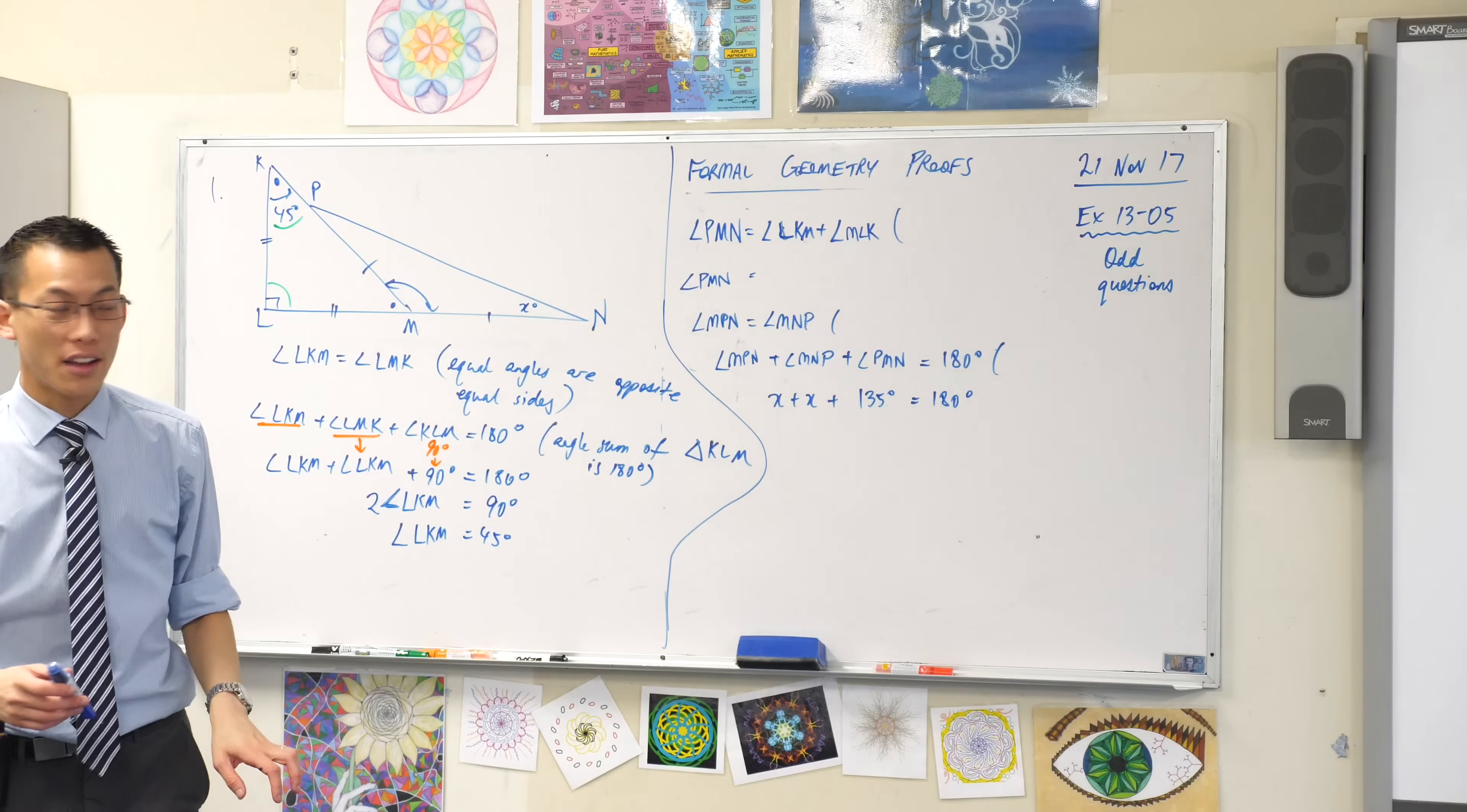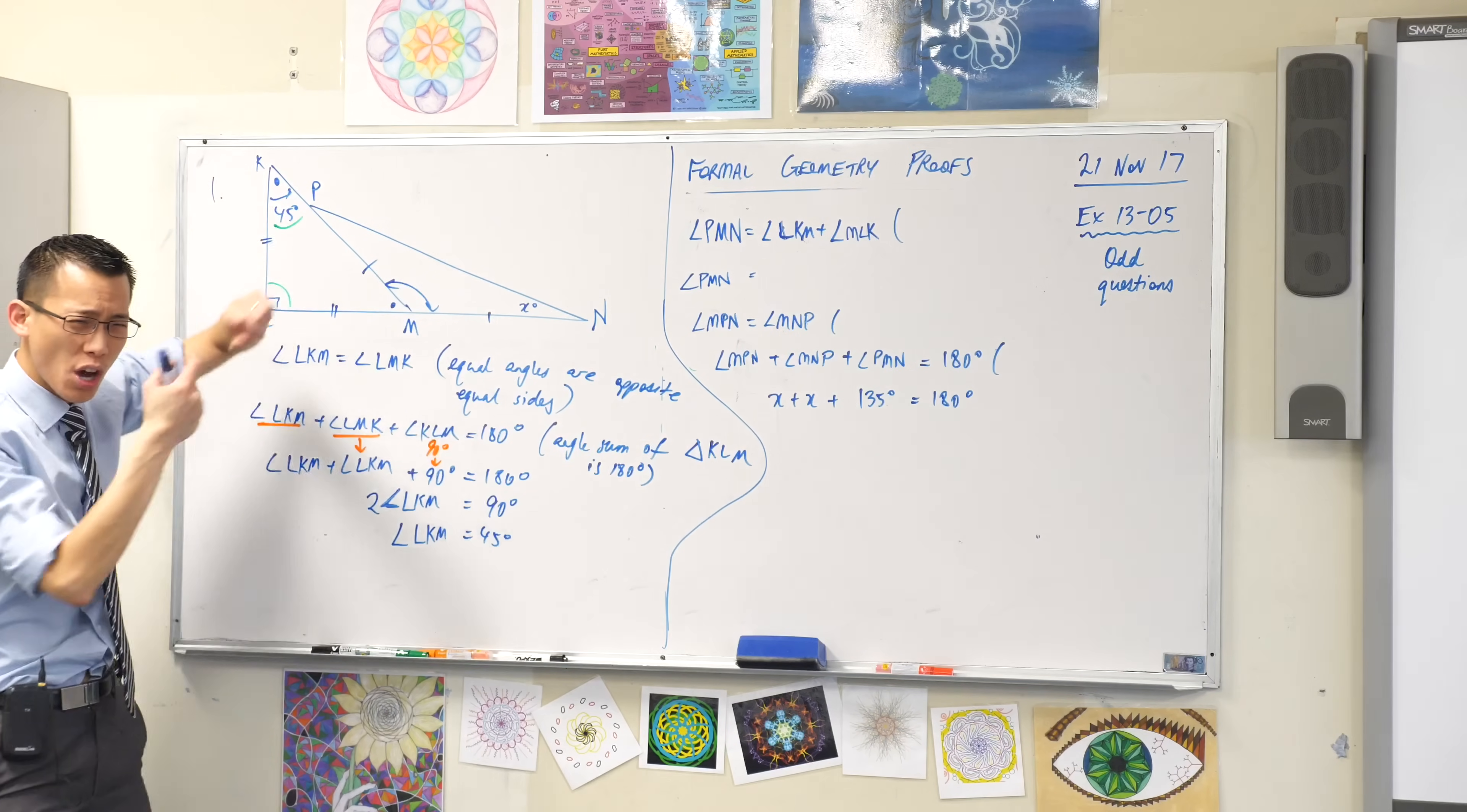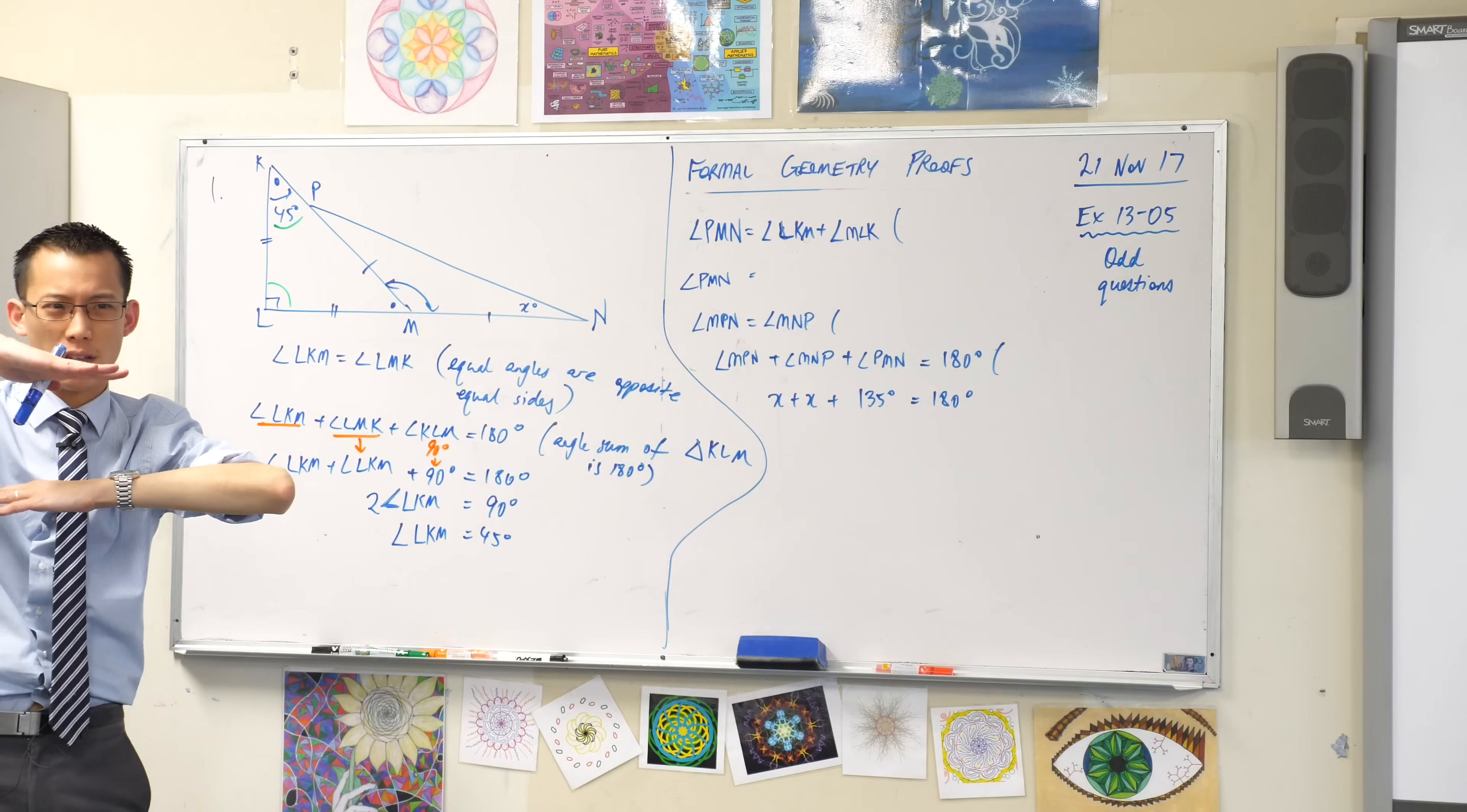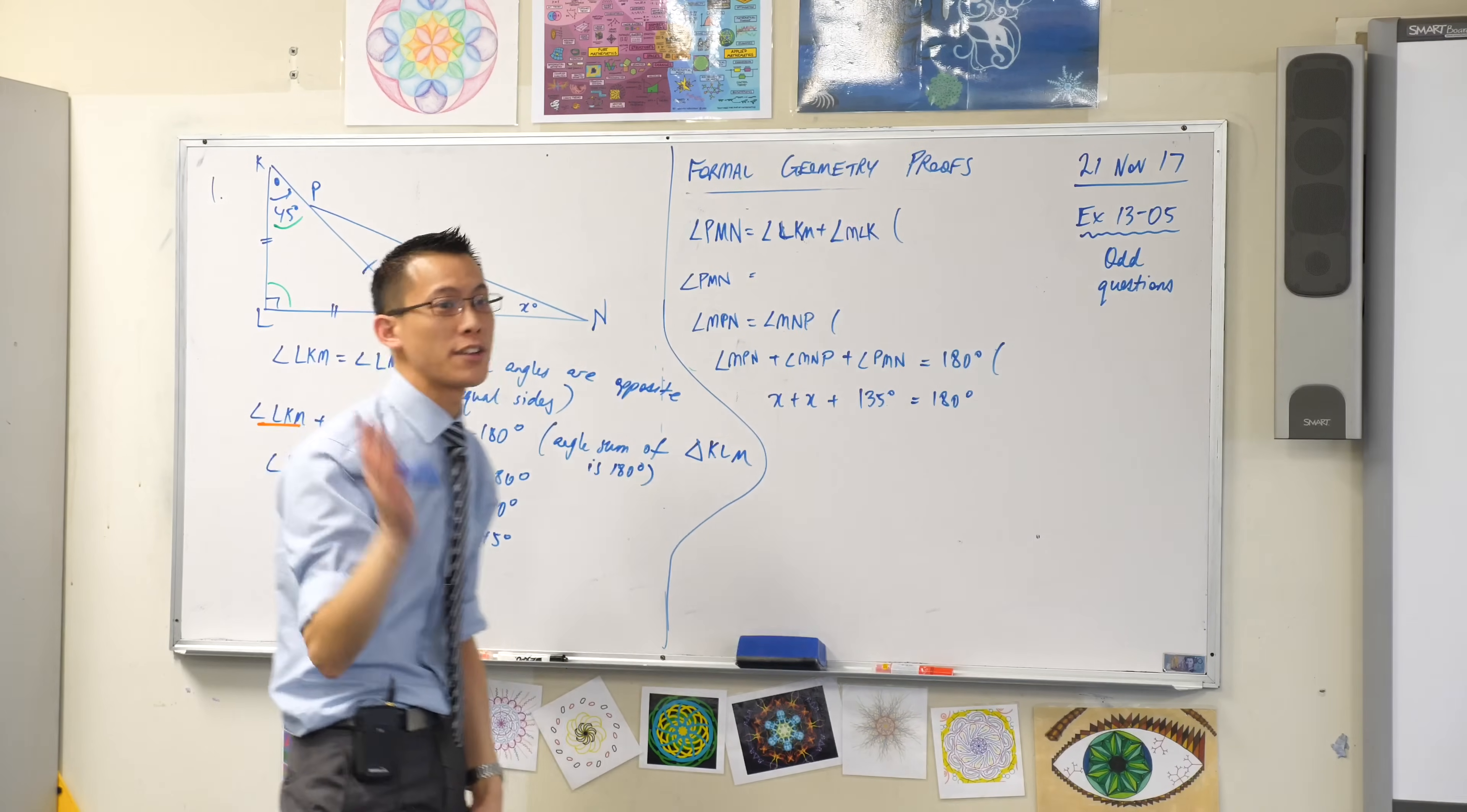Say it again? Co-interior. Co-interior. So I've got two angles that are both on the inside but those co-interior angles are usually between parallel lines and I don't really have any parallel lines here. So that's a good idea but for a different question.